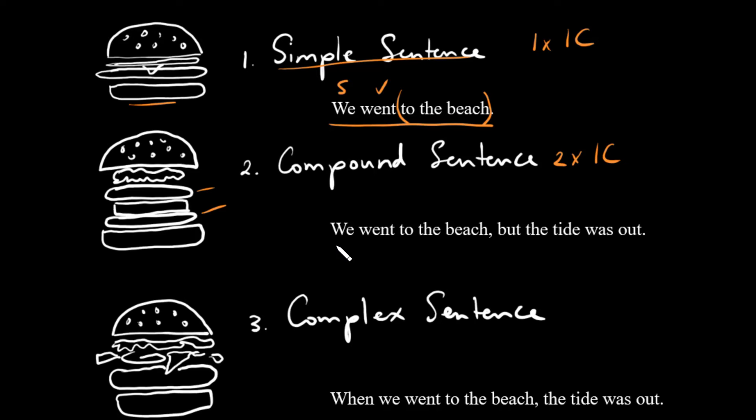And you can see here that we have we went to the beach, there is our first independent clause, and we have the tide was out. And we've joined these with a coordinating conjunction, but you can join these clauses with other things as well. So you could use a semicolon, or a dash in some cases, or even in some cases a colon. Now these wouldn't work all with this sentence necessarily, but these are viable options for connecting independent clauses. So that's our Big Mac. Two independent clauses joined together, and we call that a compound sentence.